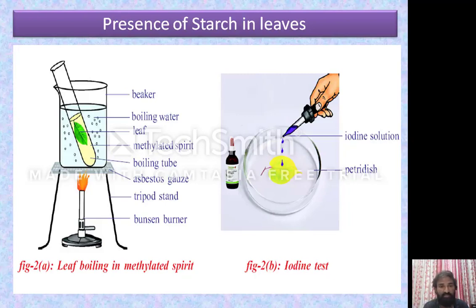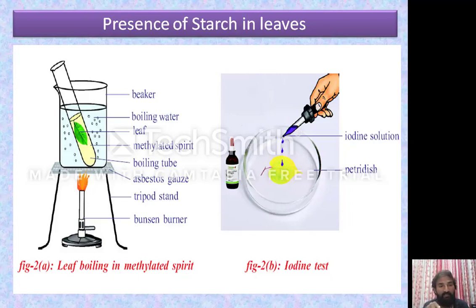Precautions: don't fill the water full in the beaker, and don't fill the methylated spirit full in the test tube. Don't heat the water up to evaporation. Take a young, healthy leaf. Take the leaf from the test tube without tearing it. Add only two or three drops of iodine solution — not an excess amount. These are the precautions while conducting the presence of starch in leaf experiment.